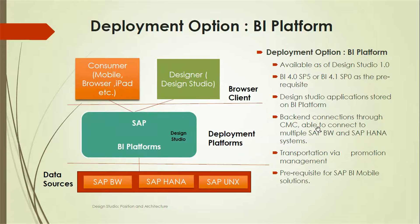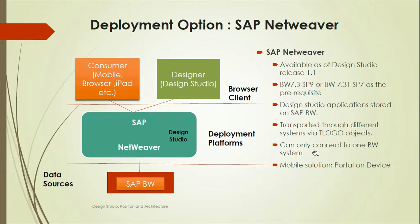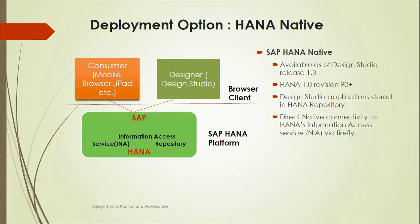For the SAP NetWeaver deployment option: when using SAP NetWeaver as a deployment platform, you can only connect to SAP NetWeaver BW - not to SAP HANA or Universes. This is available from Design Studio release 1.1 with BW 7.3 SP9 or BW 7.31 SP7. Applications are stored on SAP BW and transported through systems via transport objects, and only one BW system can be connected.